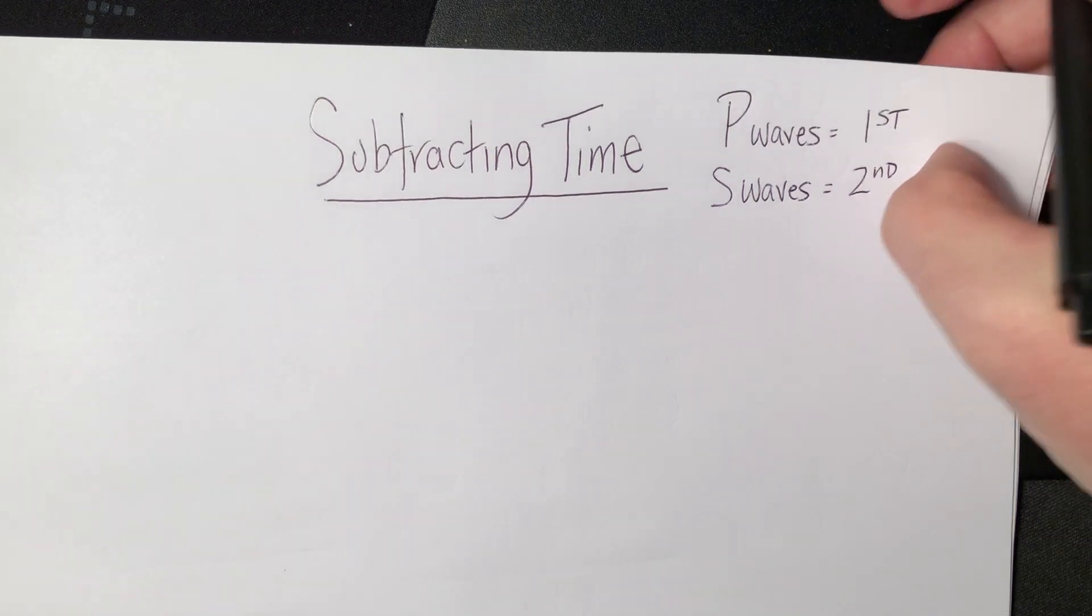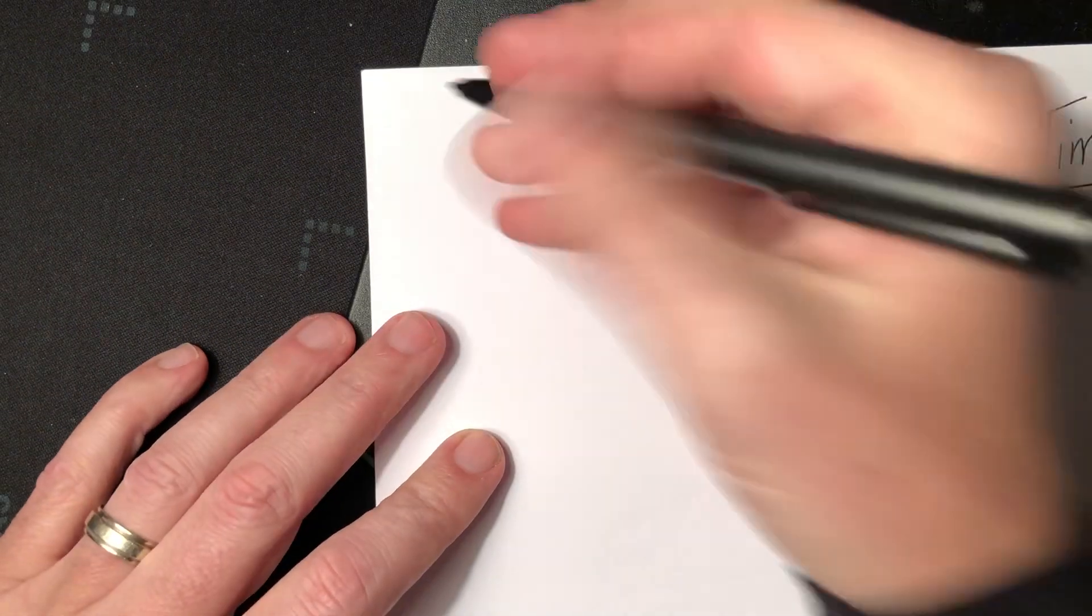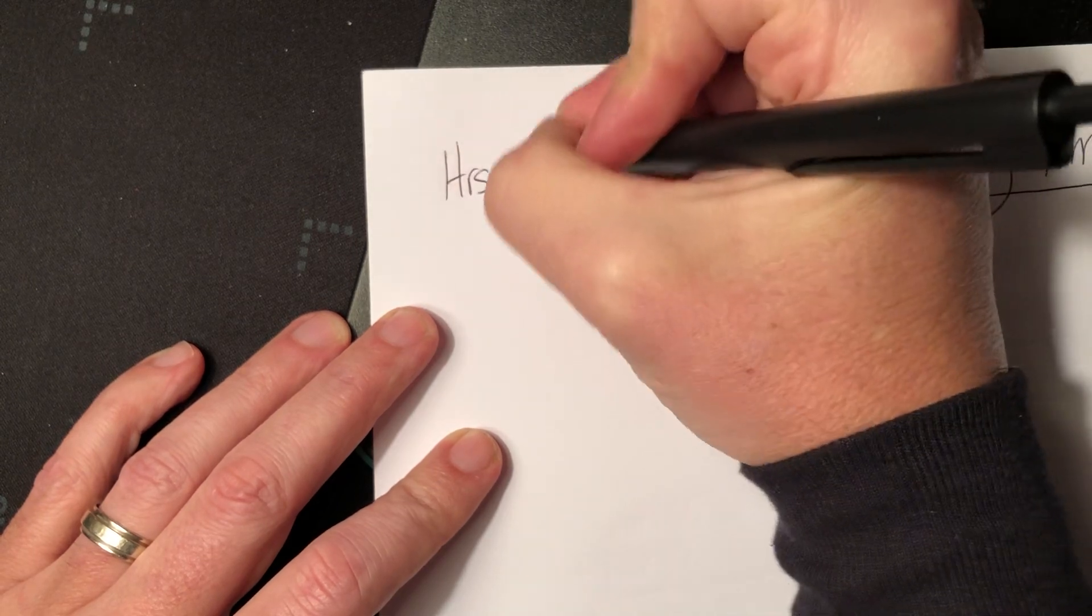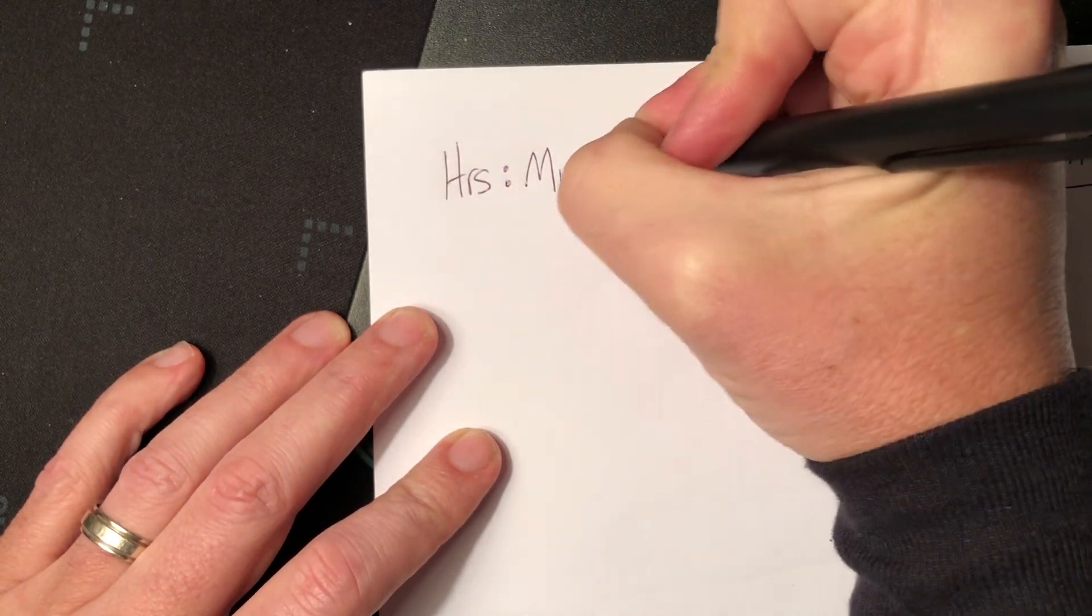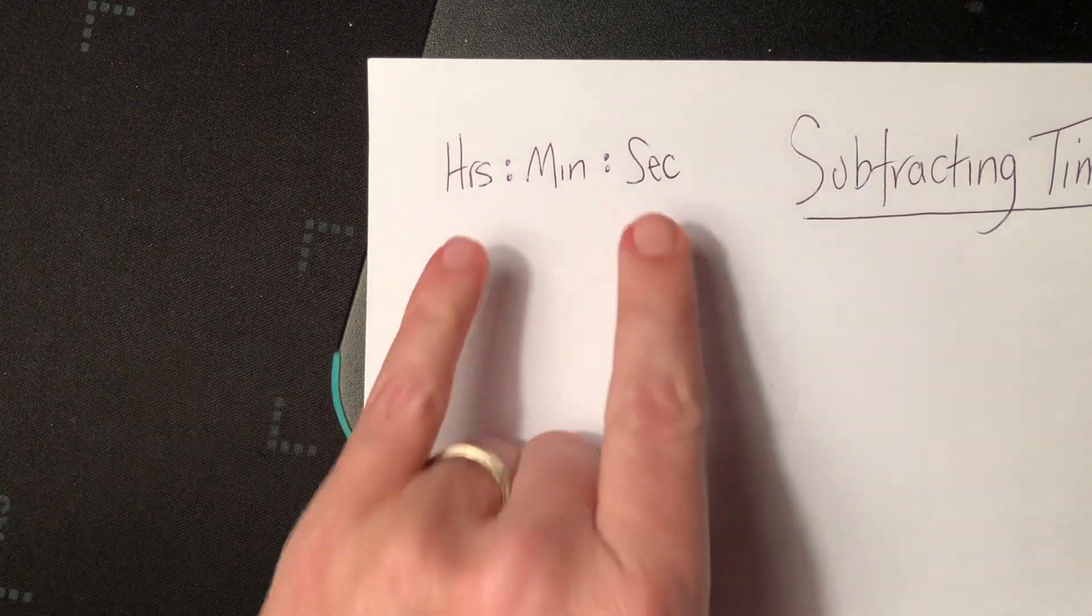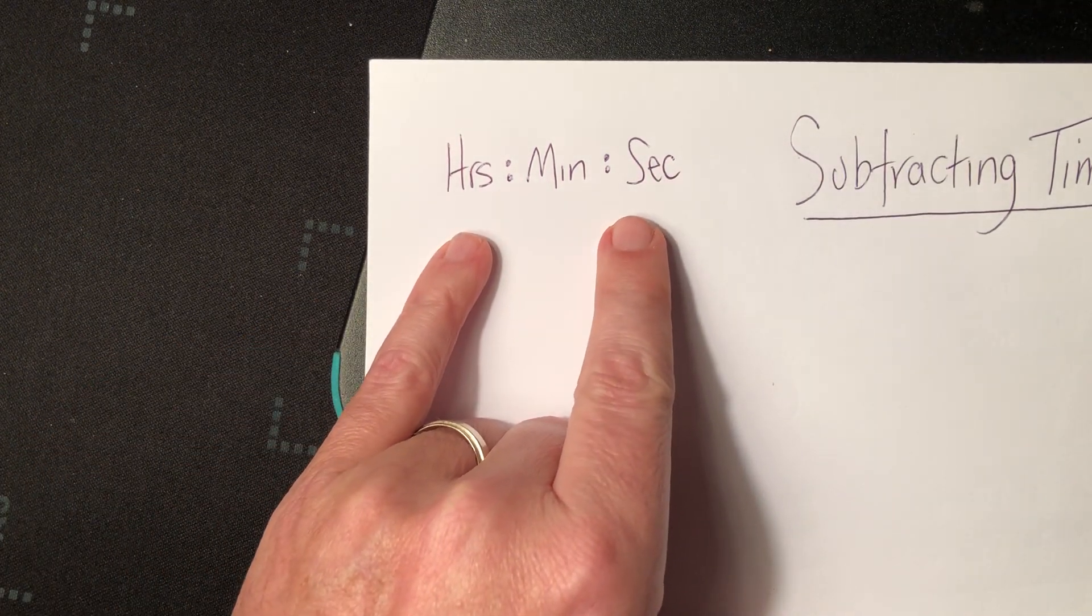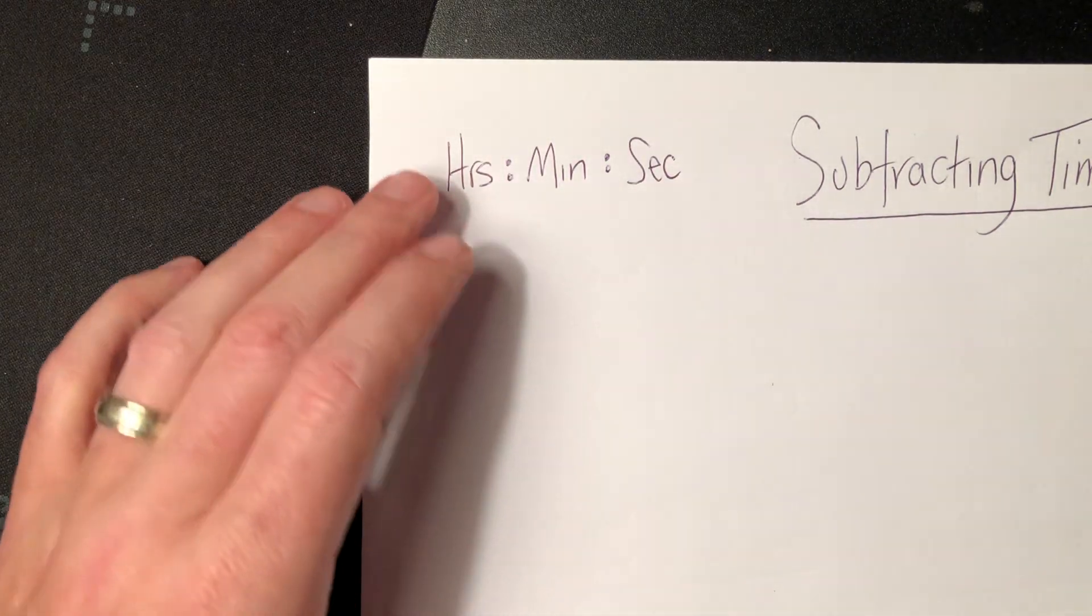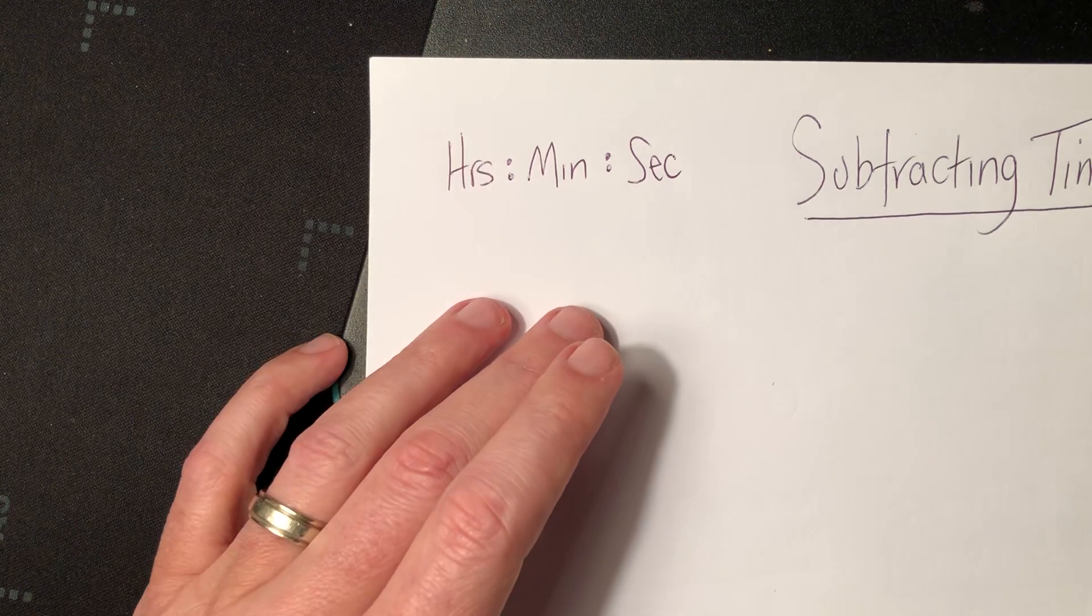So what we're going to do is we're going to set up our time to look like this: hours, minutes, seconds. I always set my time up like this because whenever we subtract time, we've got to keep everything in a nice, neat column. You have to subtract hours from hours, minutes from minutes, seconds from seconds.